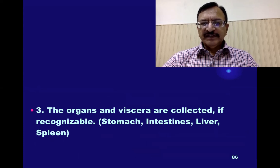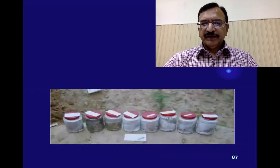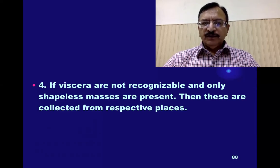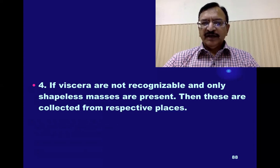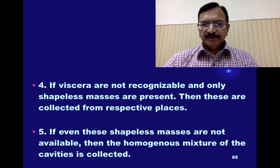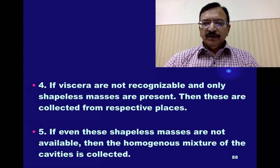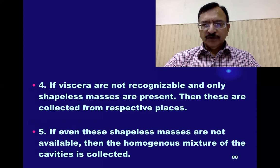The organs and viscera are collected if they are recognizable — stomach, intestine, liver, and spleen — and they are collected in separate bottles. If the viscera are not recognizable and only shapeless masses are present, then these are collected from their respective places. And if even these shapeless masses are not available, then the homogenous mixture of the cavities is collected.